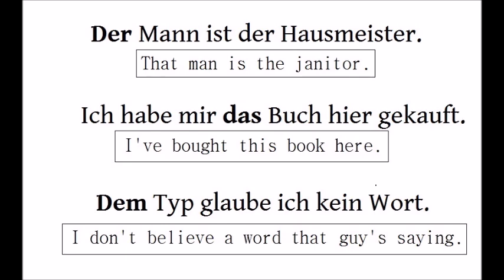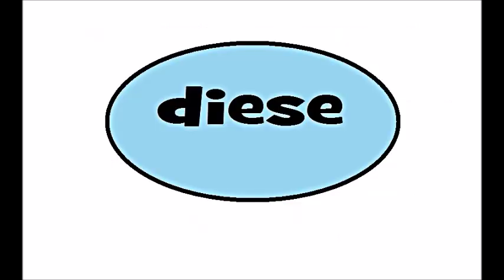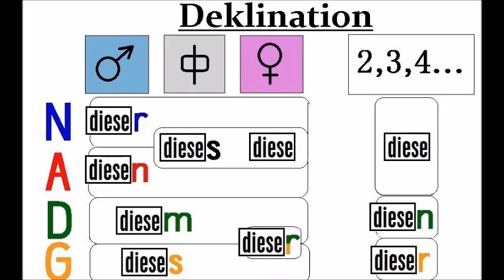Now, if you want to explicitly say 'this', you can use the article 'diese'. It has the same declination as the definite article. Just put the last letter of the definite article at the end of 'diese'. The declination table looks like this: dieser, dieses, diese, diesen, diesen.